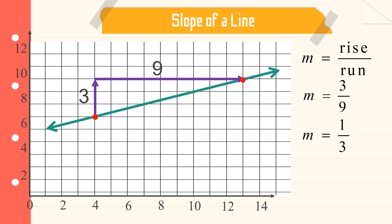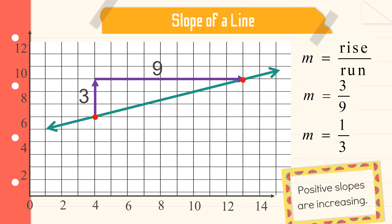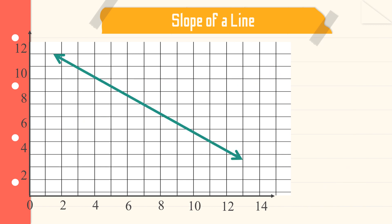So the slope is three over nine, and in lowest terms, slope is equal to one-third. Notice that the slope we solved is positive, and the graph from left to right is increasing. Positive slopes are increasing. The figure must be increasing from left to right.